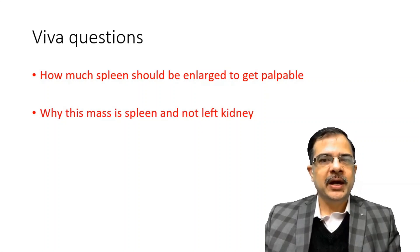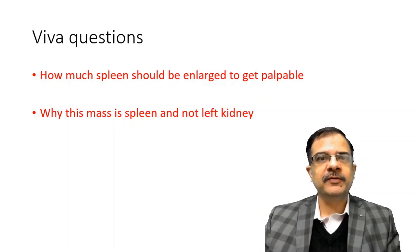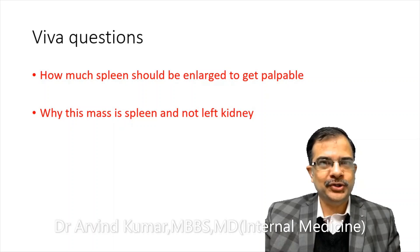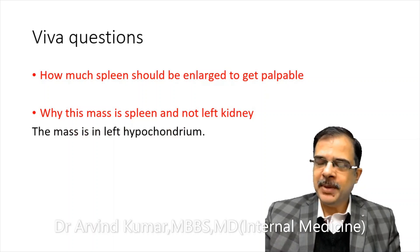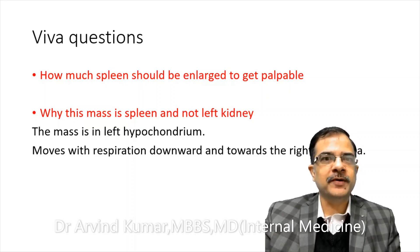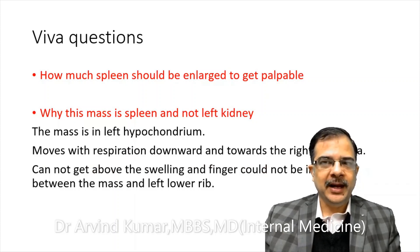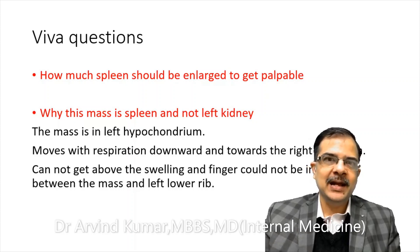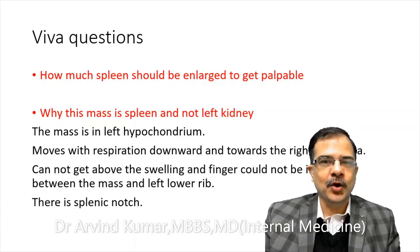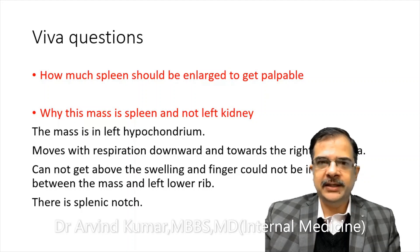Second viva question: why is this mass the spleen and not the left kidney? You have to justify your findings. In the left upper quadrant, the kidney can be palpable, like in autosomal dominant polycystic kidney disease. This mass is the spleen because: first, it is in the left hypochondrium; second, it moves with respiration downward and towards the right iliac fossa; we can't get above the swelling; fingers can't be insinuated between the mass and the left lower rib; and there is a splenic notch — a definitive sign.